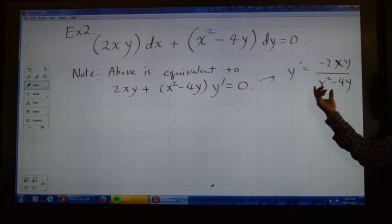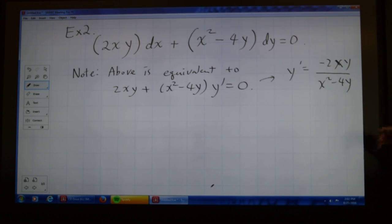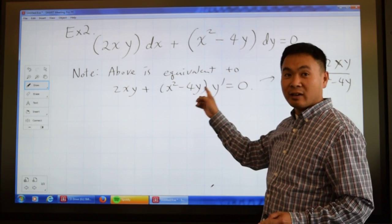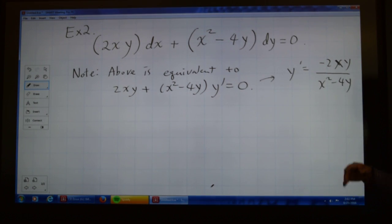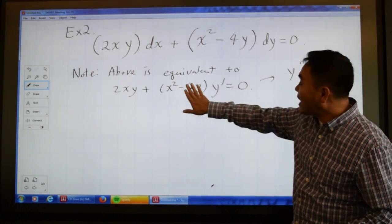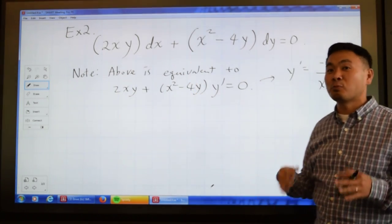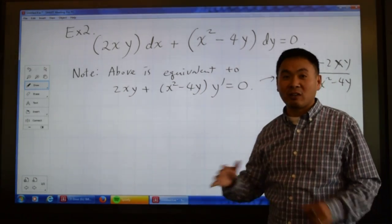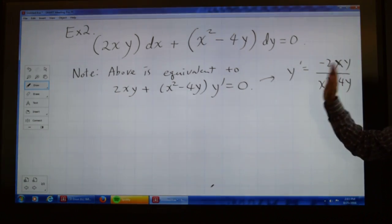Anything that can be written as f of a function of x times another function of y equals y prime — that's a separable equation; you can just divide the function of y to the other side and solve. Another way to look at this is: y prime here is multiplied to y, so it is not first order linear. If I didn't have this negative 4y, you could think of this as both first order linear and separable, but having that negative 4y spoils everything. You can't solve it by any methods from the previous sections, so you need a totally different approach.